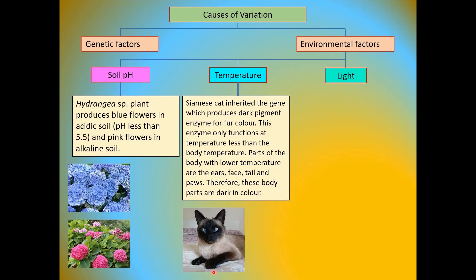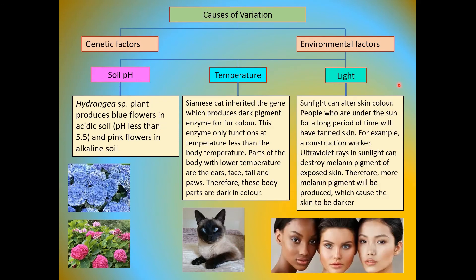Look at this diagram of the Siamese cat. For light, sunlight can alter skin color. People who are under the sun for a long period of time will have tanned skin, for example a construction worker. Ultraviolet rays in sunlight can destroy melanin pigments of exposed skin. Therefore, more melanin pigments will be produced, which cause the skin to be darker.